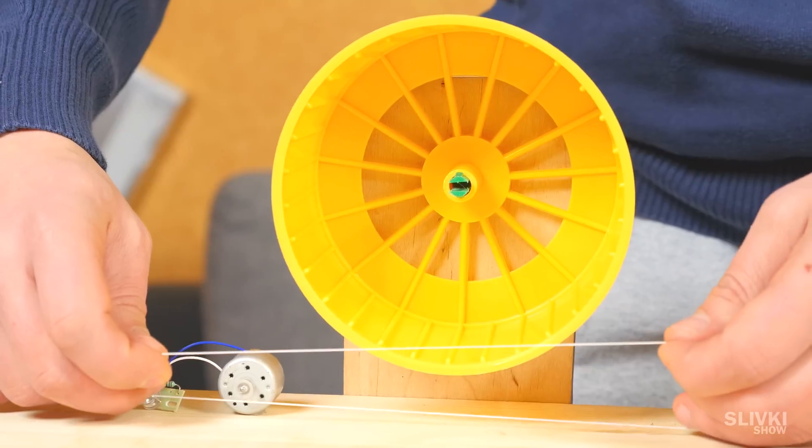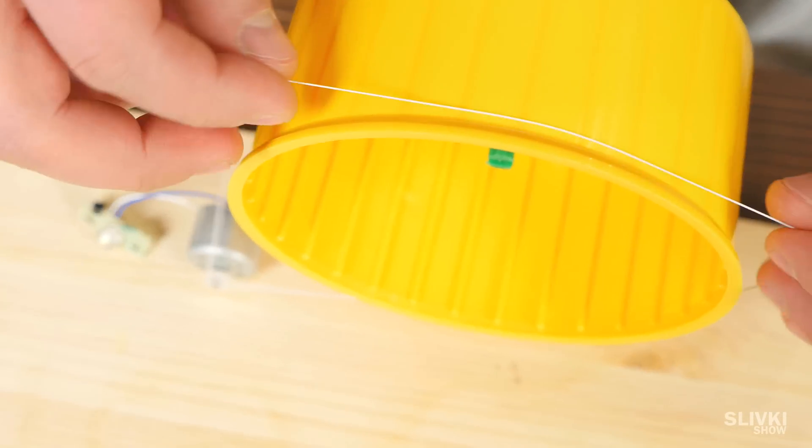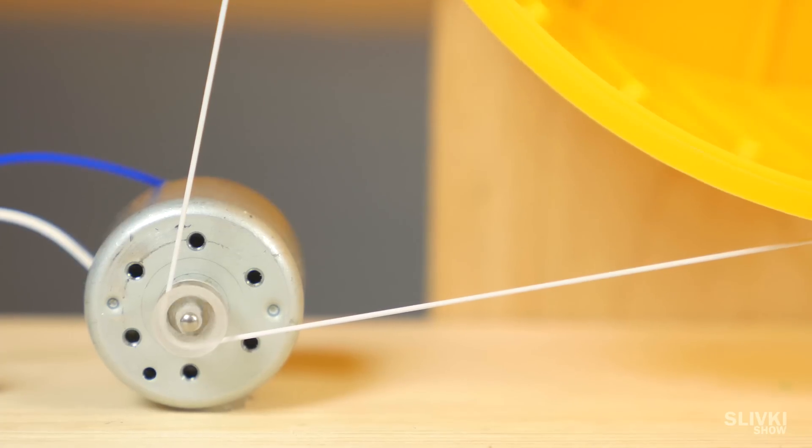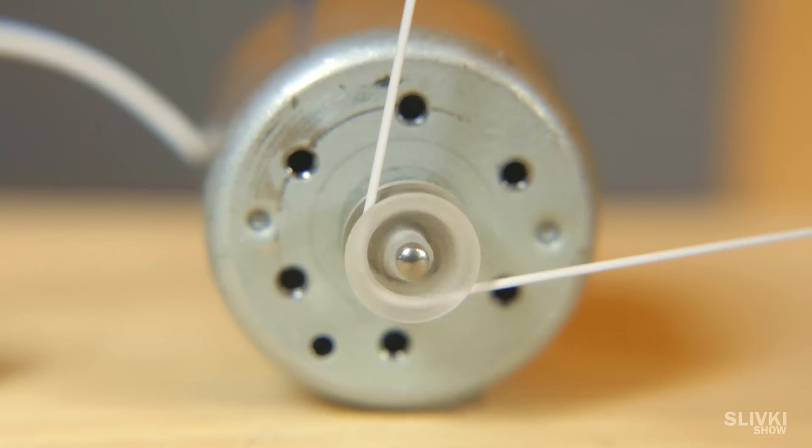We only need to put rubber on a wheel and pulley of an engine. That's it, turning a wheel, it will send torque to an engine, and it will generate electricity and light our light.